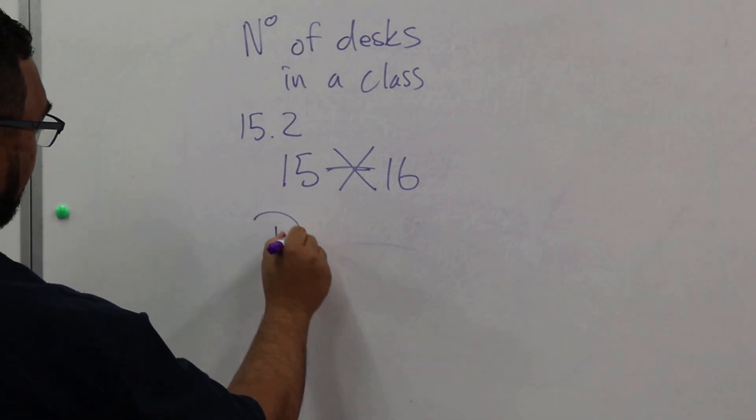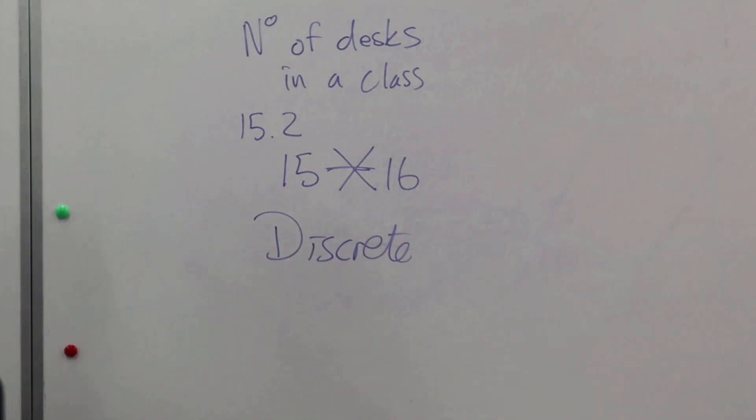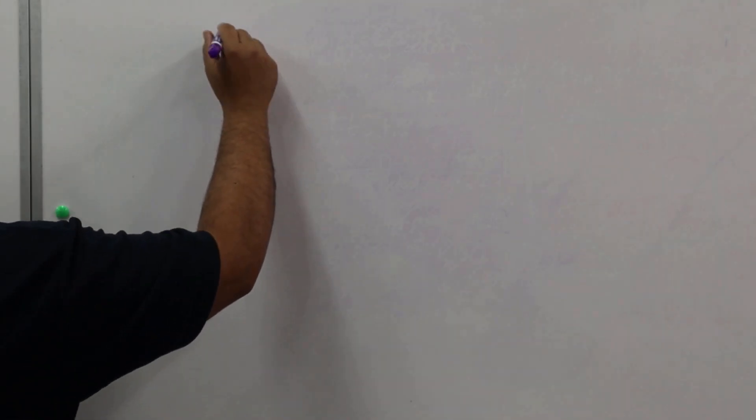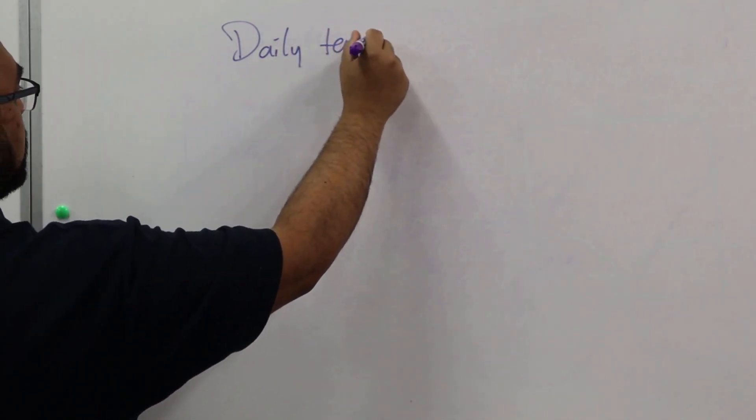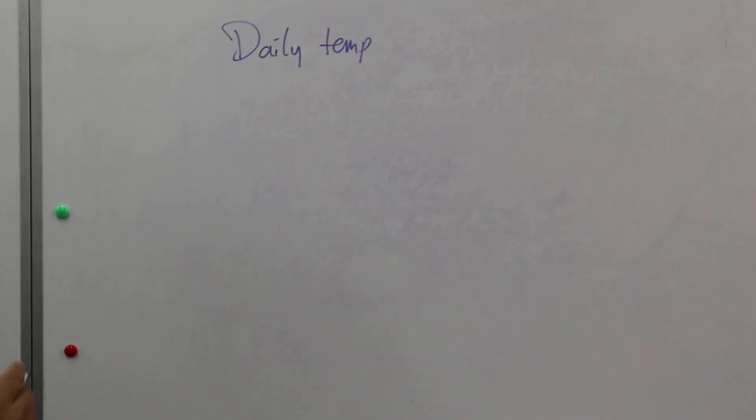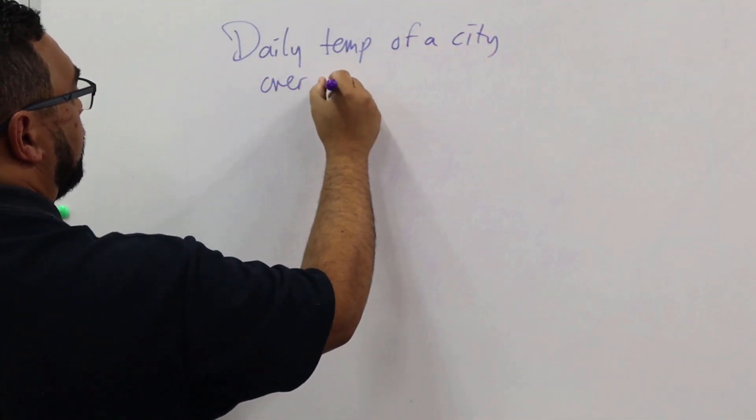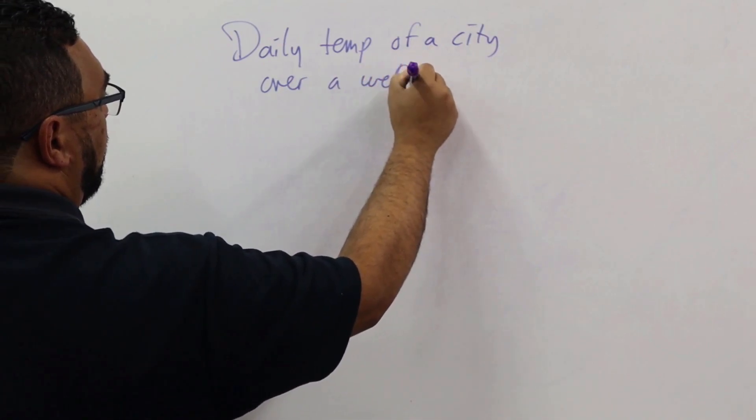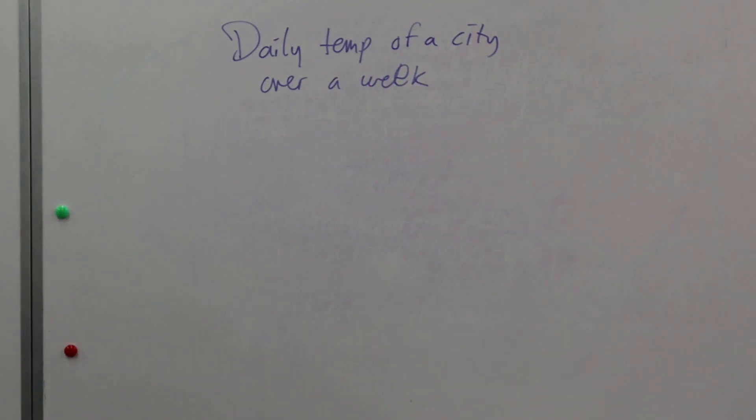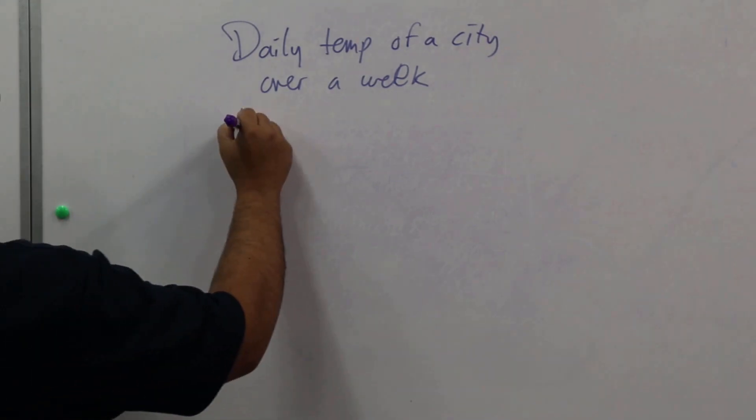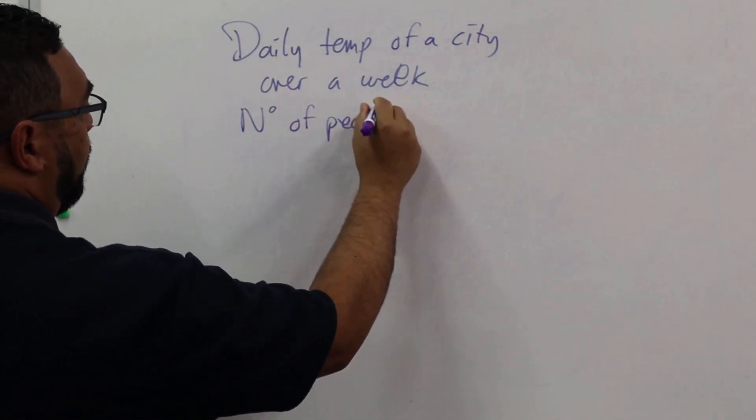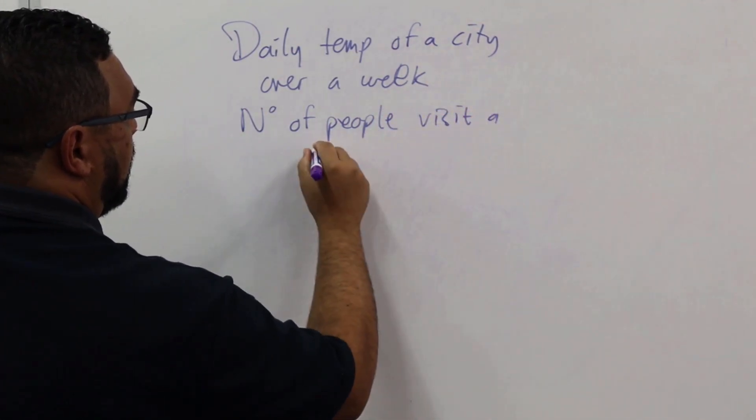That's right, this is discrete data. As we said, there are whole separate values. And then our last example of something you might see in an exam: a researcher records daily temperatures of a city over a period of one week. He also counts the number of people who visit a park every single day.